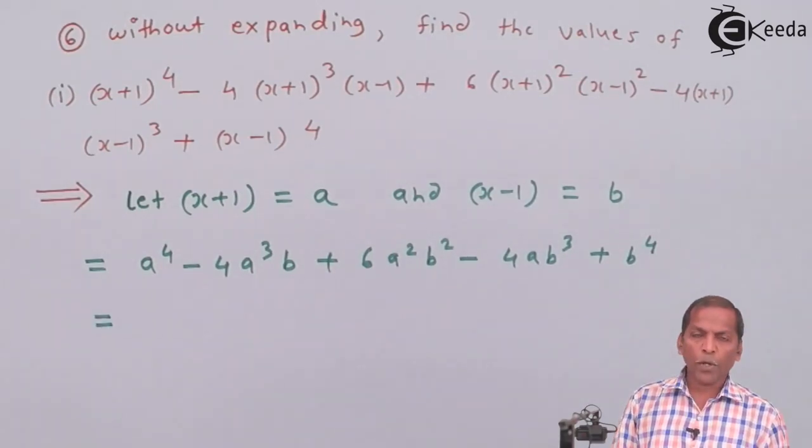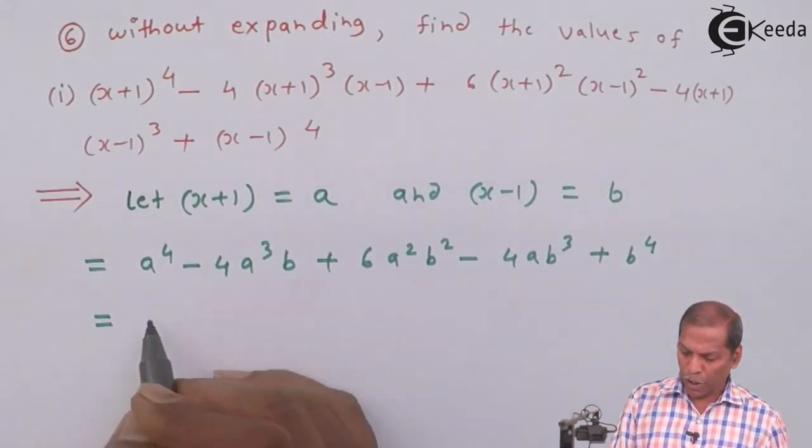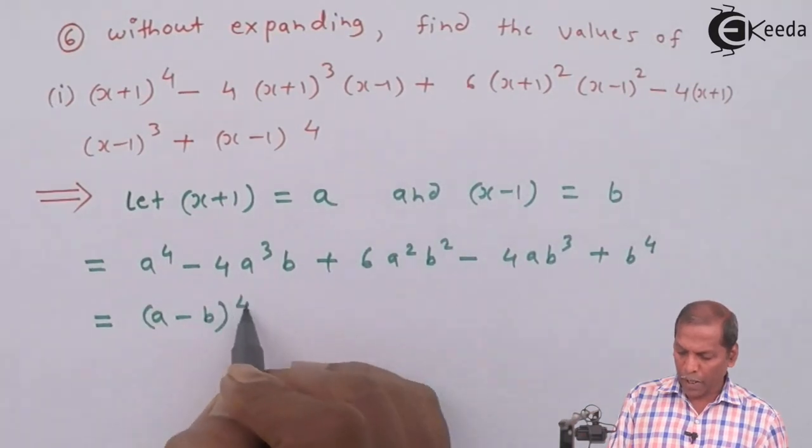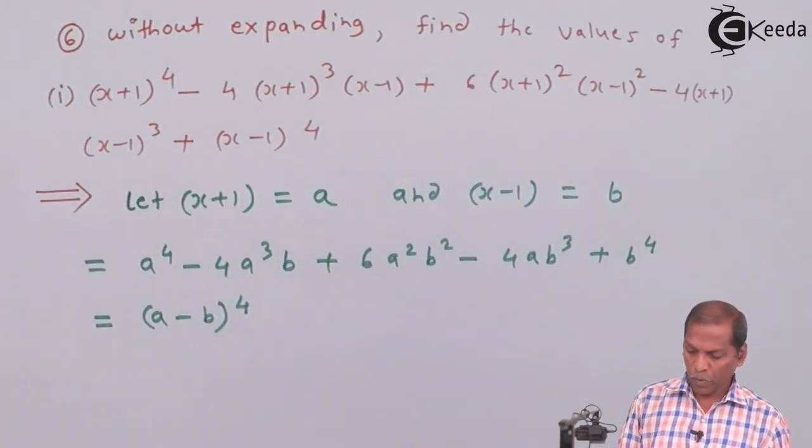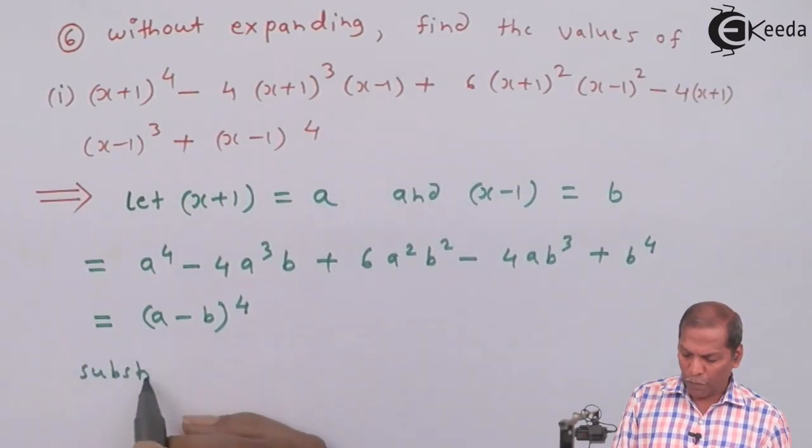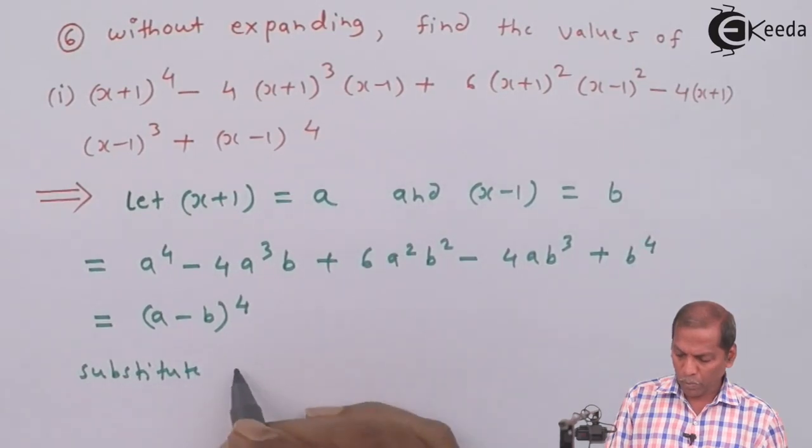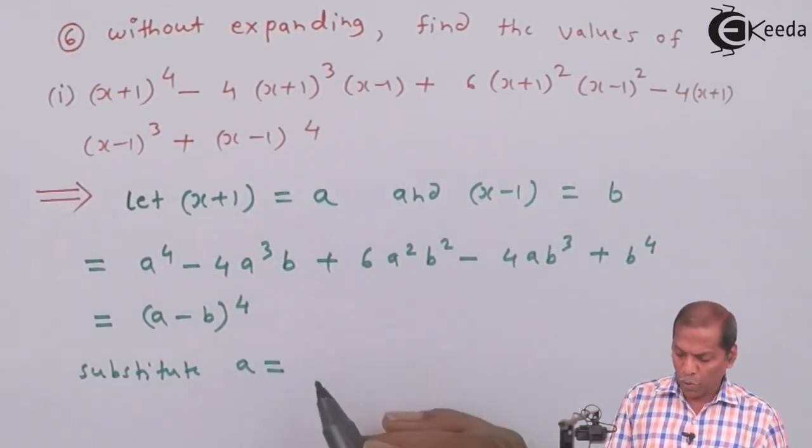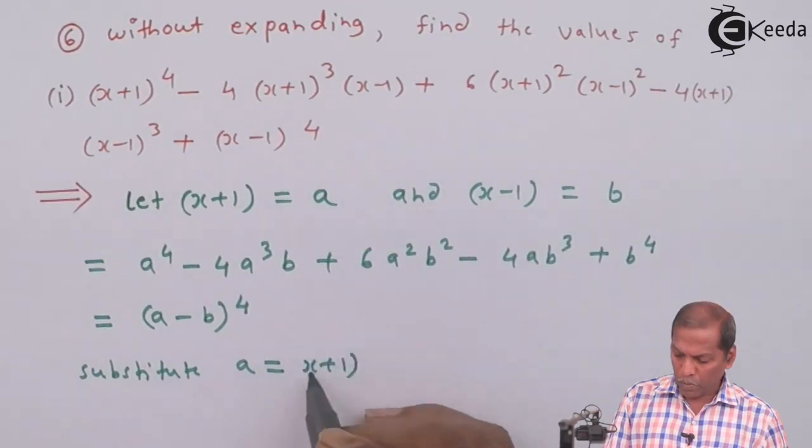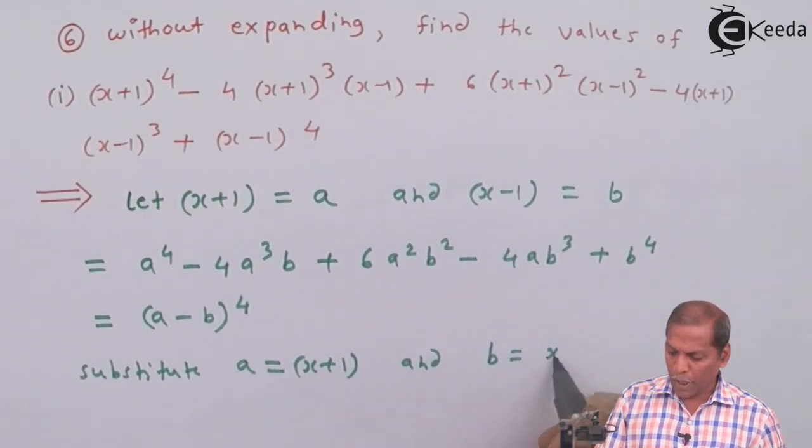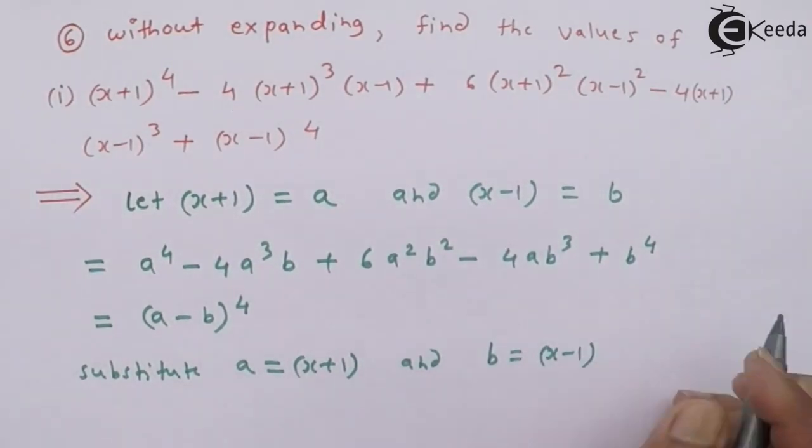Now by using binomial theorem, this is nothing but (a-b)^4. Now substitute the values of a equal to x+1 and b equal to x-1, we get.